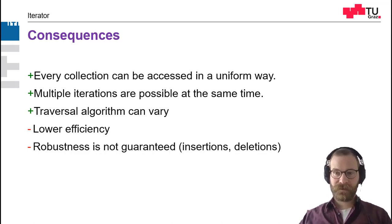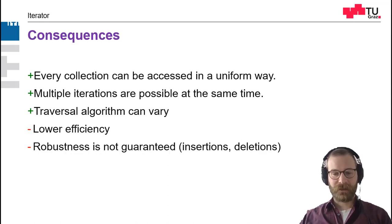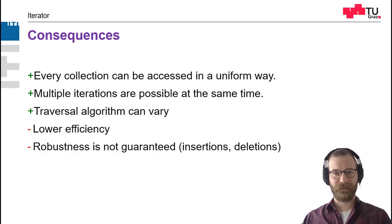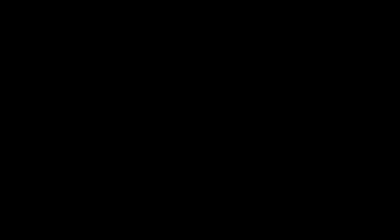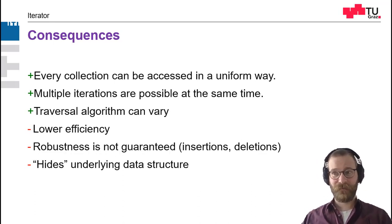There are different variants to choose from — either make it more robust or not. For example, we could store whether an iterator is active on a list and restrict insertions or deletions. Or we could just go on: if we insert some elements we continue, and if we delete elements and reach the end, we just stop the iterator. It also hides the underlying data structure — by accessing all data structures the same way, we don't know if the underlying structure is a tree, dictionary, array, or list. This can have performance implications.